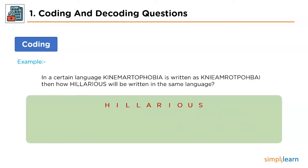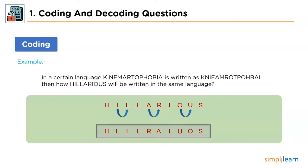The first letter will retain its position, and for the second position we'll have L and then I. After that, we'll keep L as it is and then interchange the positions of A and R. The next characters will be I, U, O and S. Thus, the answer to this question should be H-L-I-L-R-A-I-U-O-S.